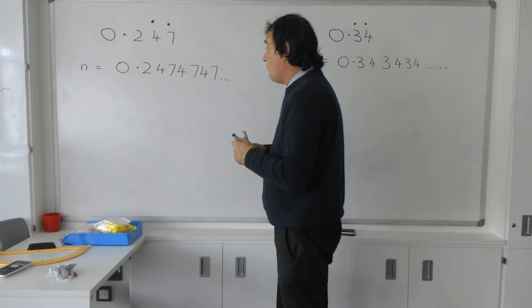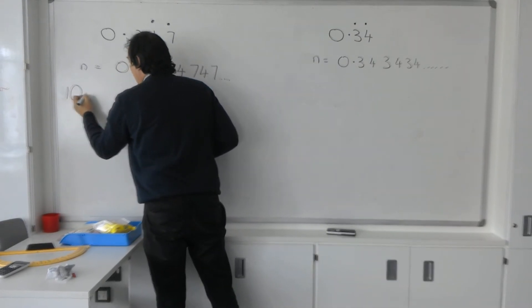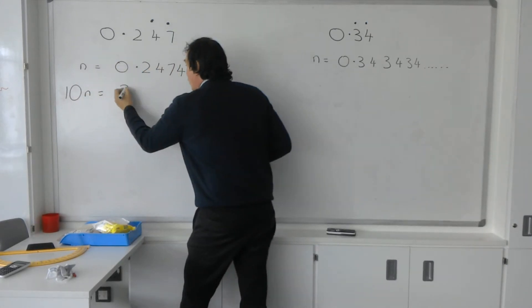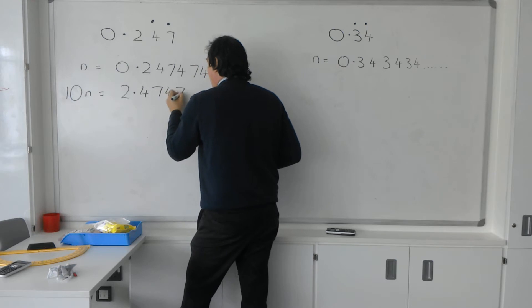So to do that, we've got to multiply by 10. If we say 10N, multiplying this decimal by 10, it's going to be 2.4747 and so on.